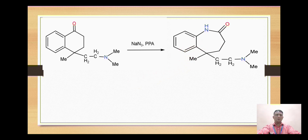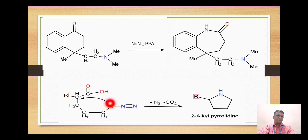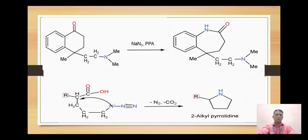The product obtained is benzazepin-2-one. In the next example, if a single molecule contains both a COOH group (carboxylic acid) and a hydroxy portion, the negatively charged nitrogen attacks the carbon bearing the COOH group. CO2 is liberated as carbon dioxide and N2 is liberated as nitrogen gas, giving formation of a five-membered pyrrolidine ring. That is all about the Schmidt rearrangement reaction. Thanks for watching — please like, share, and subscribe.